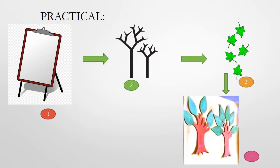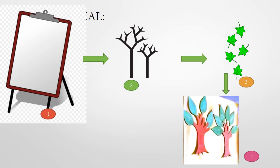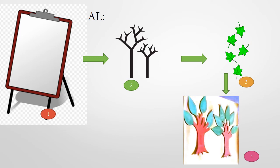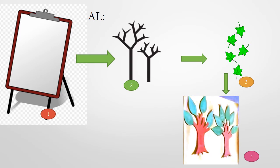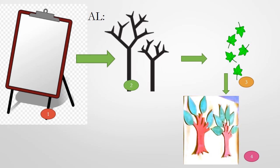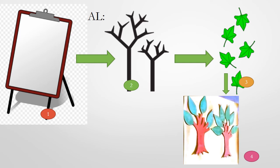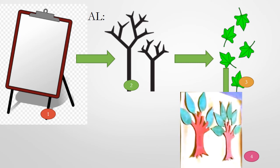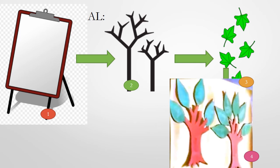This is the practical - how you will do it practically. First, take a chart paper or an A4 sheet. Then the second step: draw the two tree trunks. Next, the third step: cut five leaves each for living and five leaves each for non-living things. You can cut leaves in any shape. After writing the names of the living and non-living things, paste the leaves as shown. This way, our activity will be completed. You can use anything to decorate your work.